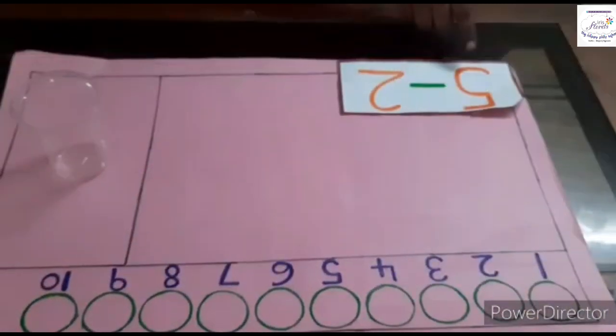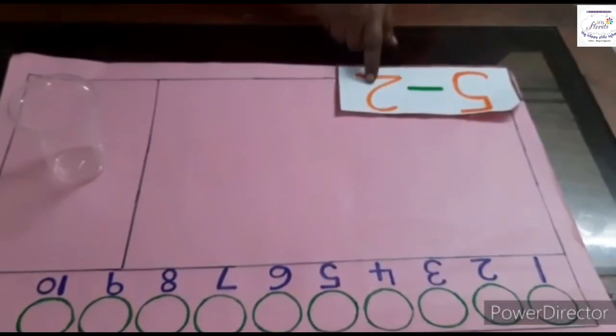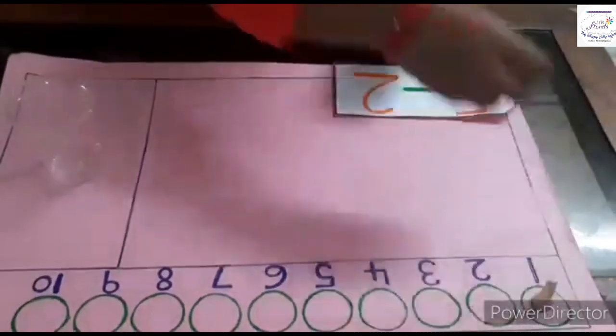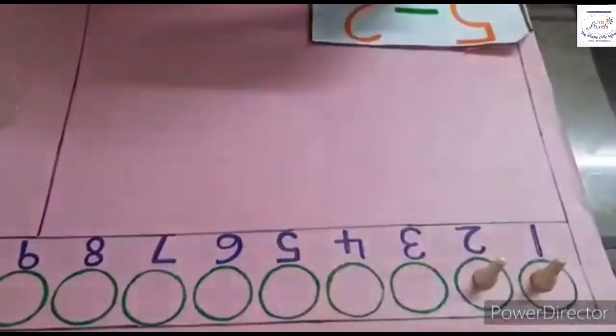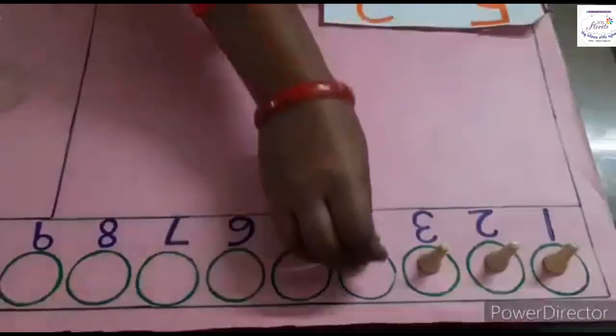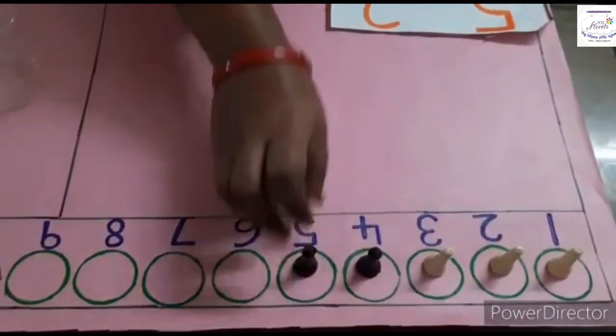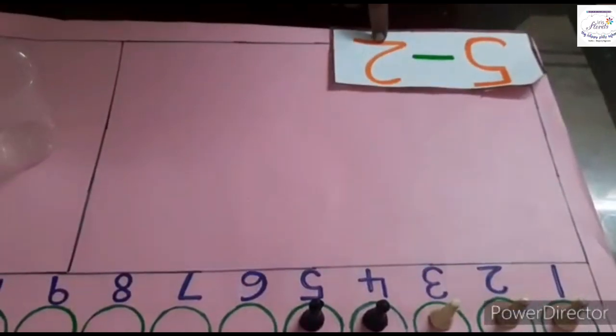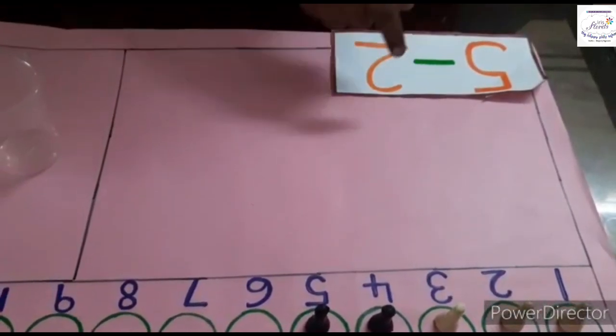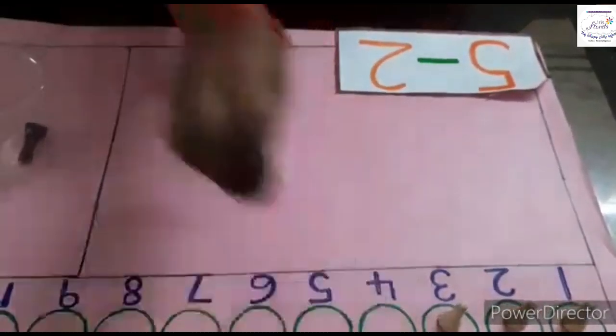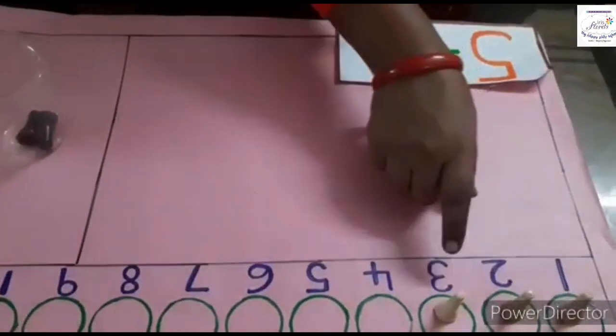Children, now I am taking numbers 5 and 2. I am taking 5 chess coins: 1, 2, 3, 4, 5. Here 5 minus 2, I am removing 2 from 5: 1, 2. How many are left over? 1, 2, 3.